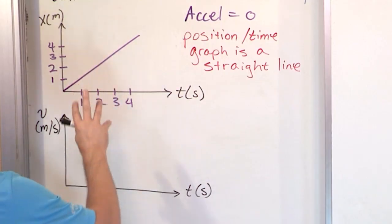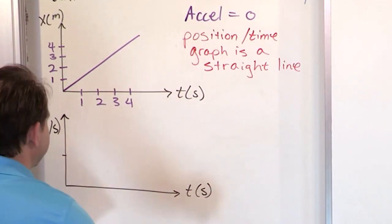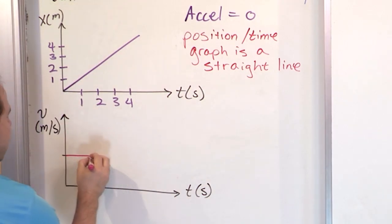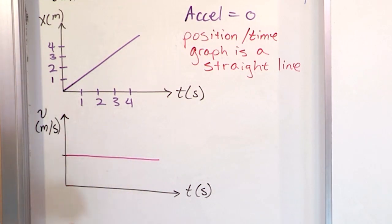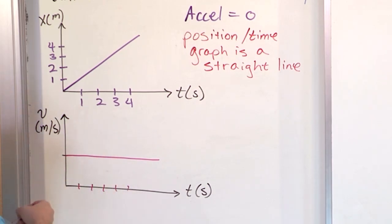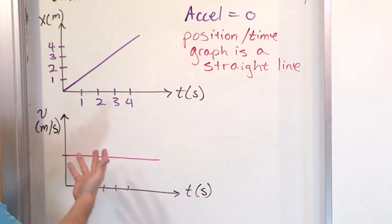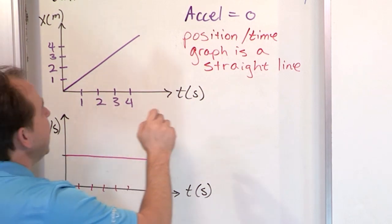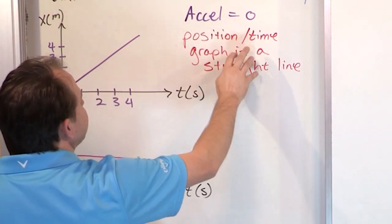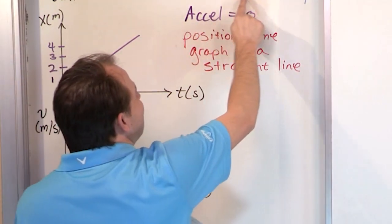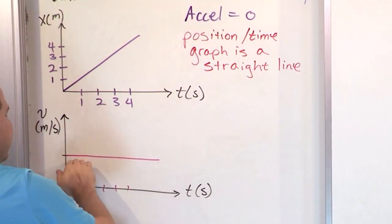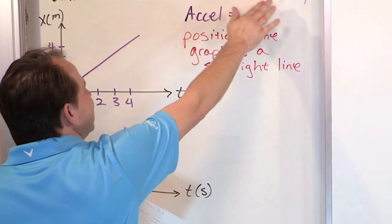So the velocity is going to be a constant number that doesn't change with time — maybe five meters per second. This is time ticking along in seconds, but the velocity doesn't change. It's non-zero, you could be going three meters per second, but it doesn't change. Notice: acceleration zero, position-time graph is a straight line, velocity is constant — these are just different ways of saying the same thing: uniform motion.